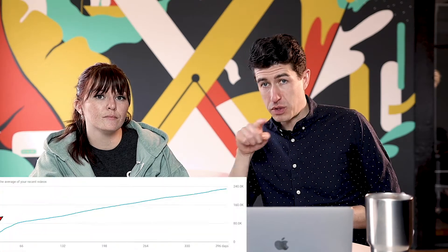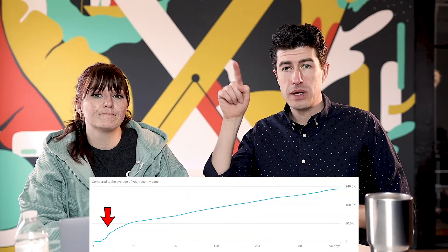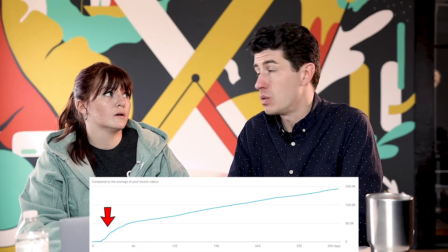The higher your click-through rate, the more likely the algorithm is to push that video to other people. For Flutter specifically, we could literally watch the trend — the click-through rate picked up, then the algorithm recognized it as relevant to far more people than who normally watch our videos. But that doesn't carry over to every video — you could have an incredible click-through rate on one video and that won't necessarily influence the next one.